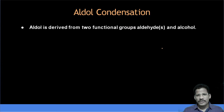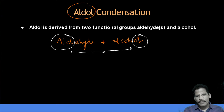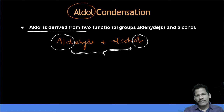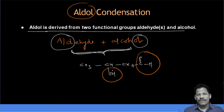You should remember: if you have dilute base, that is called aldol condensation. If you have concentrated base, that is called Cannizzaro reaction — we will discuss that in the next session. The word 'aldol' is a mixture of two names: aldehyde and alcohol. These two functional groups are combined together. For example, the compound CH3CH(OH)CH2CHO contains both an aldehyde functional group and an alcohol functional group — that's why it is called an aldol.